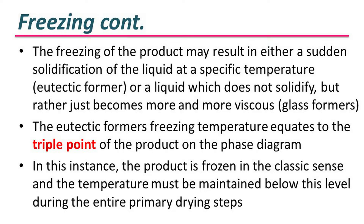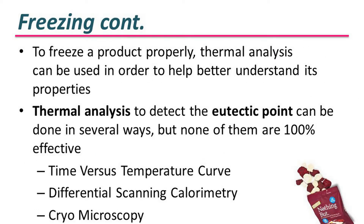The eutectic point for freezing temperature equates to the triple point of the product on the phase diagram. In this instance, the product is frozen in the classic sense and the temperature must be maintained below this level during the entire primary drying step. In order to freeze a product properly, thermal analysis can be used to better understand its properties.